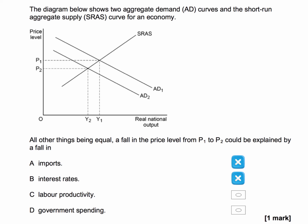What about a fall in labour productivity? Well, a fall in labour productivity basically affects supply rather than demand. Labour productivity is a supply side factor and that would cause an inward shift of aggregate supply. So that's not right.